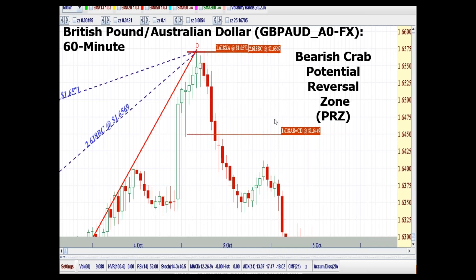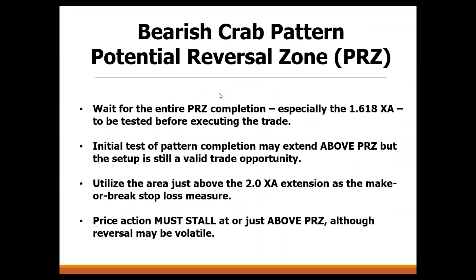Here's the price action at the potential reversal zone — really strong movement up into that area. It hits the 1.618 extension and has a little retest on the 60-minute chart, so you're up there for nearly three hours before the larger reversal ensues. You have to wait for the full test of the PRZ, especially focusing on what happens at the 1.618 XA. The initial test of the pattern on the crab may extend above the PRZ but it's still a valid opportunity — that's where we use the 2.0 XA extension. Price action must stall at or just above the PRZ.